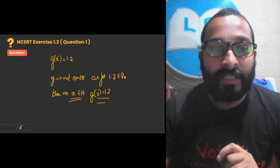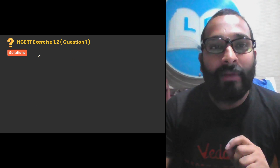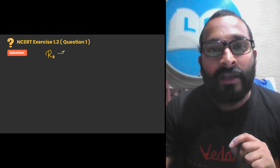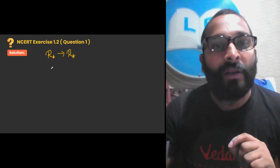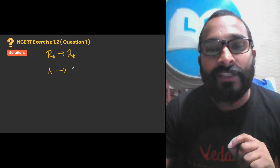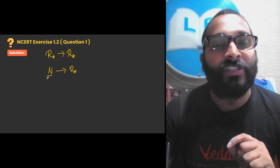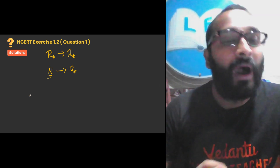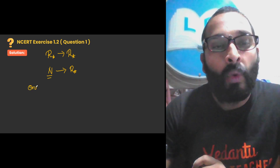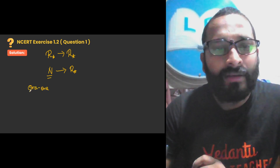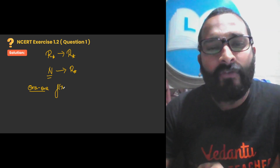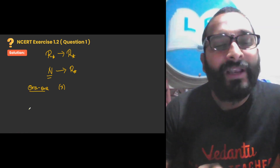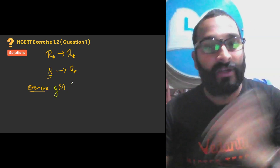Now let us solve the second part of the question. Here, if we replace the domain with ℕ (the set of natural numbers), while the co-domain remains the set of non-zero real numbers (R*), what happens? For this second sub-question the domain is changed to ℕ. We consider a new function g(x) = 1/x, with domain ℕ and co-domain R*.